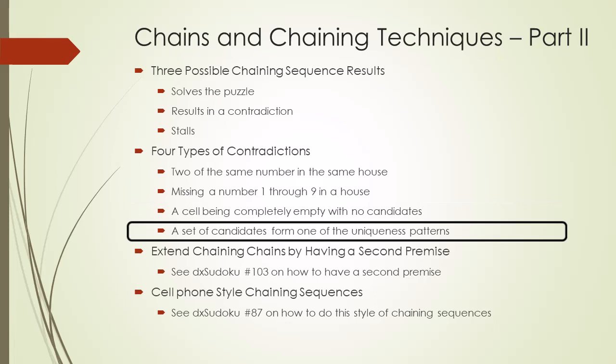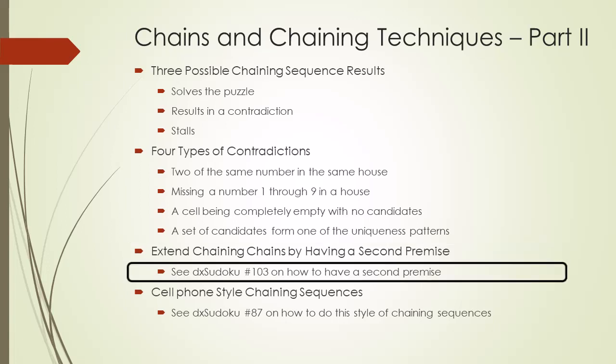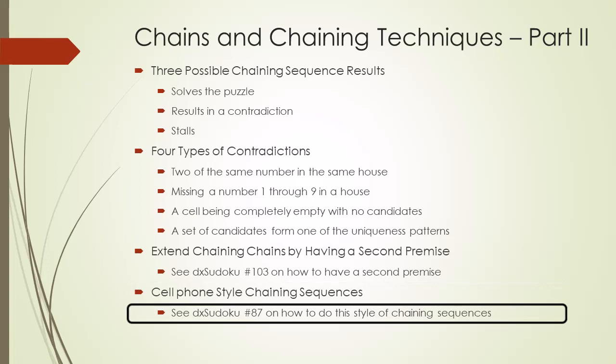When a chaining sequence stalls, it can be extended by using a second assumption and then continuing. See DX Sudoku video number 103 for an example of how to extend a stalled chaining sequence. In this video, the demonstrations will be done using the cell phone style of doing chaining sequences. For a tutorial on cell phone style chaining sequences, watch DX Sudoku video number 87.